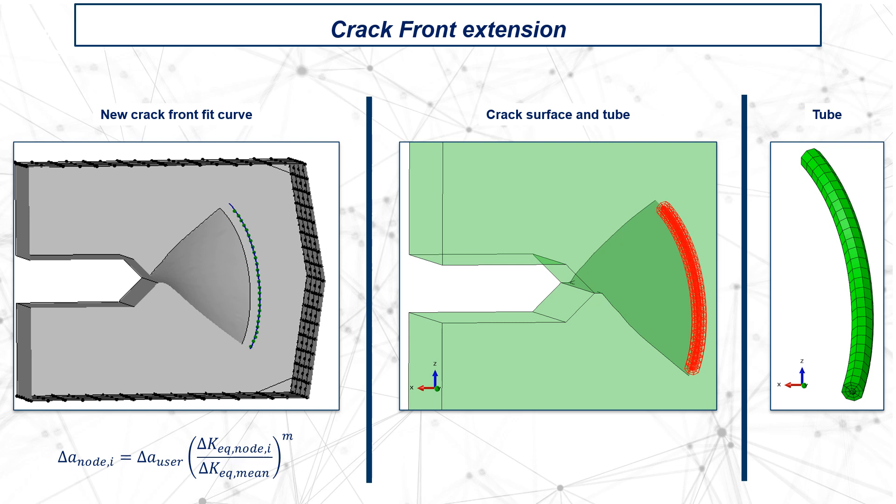The remeshing phase starts with the creation of a tube around the crack front made up of three rings. The inner ring, in contact with the front, is built up with quarter-point singular wedge elements. The outer rings are made up of brick elements. Thereby, a layer of pyramid elements around the tube provides the compatibility between the tubes' brick elements and the volume tetrahedral elements.